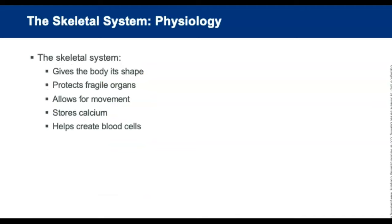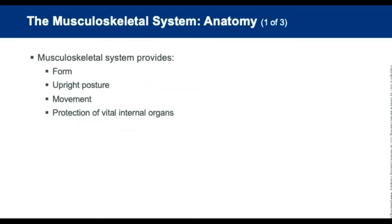The skeletal system gives the body its shape, protects fragile organs, allows for movement, stores calcium, and helps create blood cells. The musculoskeletal system provides form, upright posture, movement, protection, and vital internal organs.